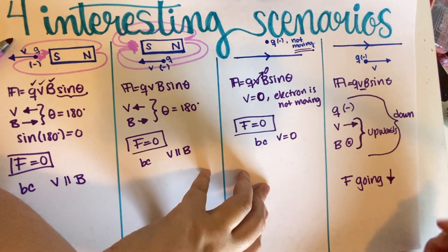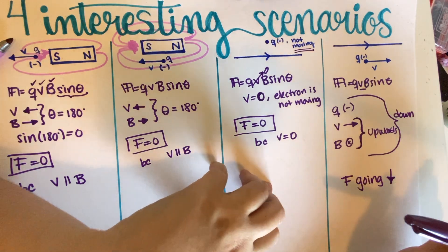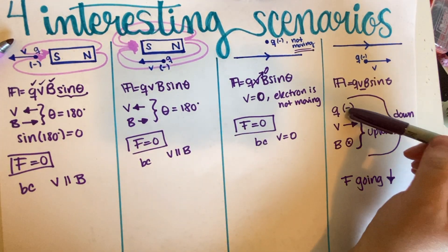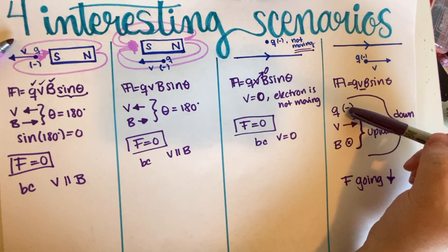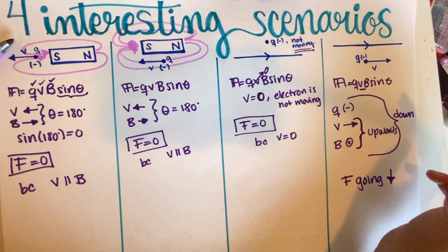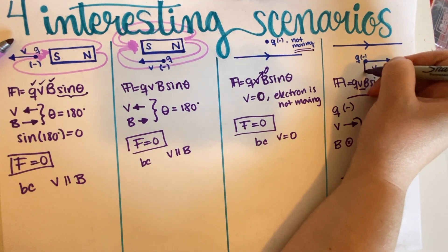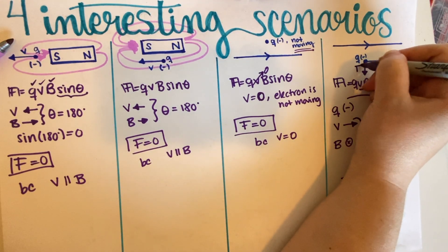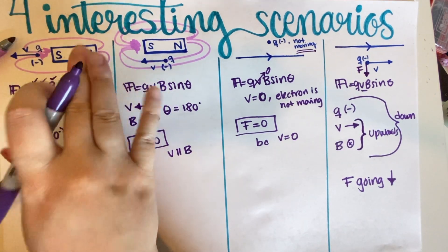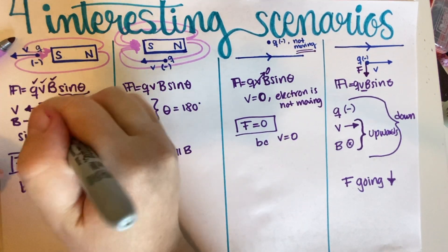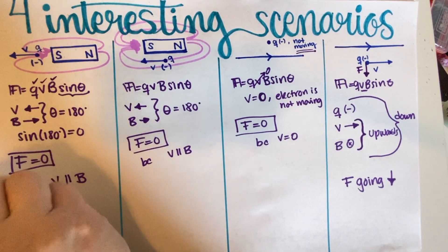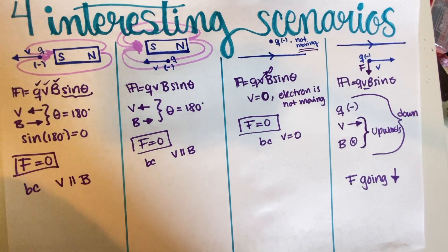So the force vector points down. The key takeaway is: it's not enough to just apply the right-hand rule — you also have to consider the sign of the charge, and if it's negative you need to flip your answer. That's the end of this practice problem. I hope you found it useful; if you did, please leave a like and I'll see you in the next video.